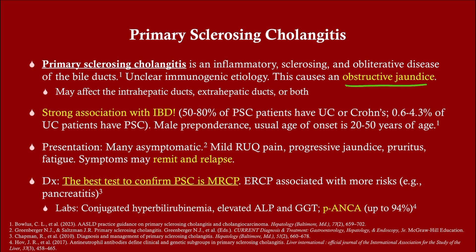Ankylosing spondylitis is another autoimmune disorder with male preponderance, but big autoimmune disorders like lupus, RA, and autoimmune hepatitis have a much bigger female preponderance. The presentation: most of these patients are asymptomatic, but if they do develop symptoms it's going to be those associated with obstructive jaundice — such as jaundice and acholic stools. The symptoms can remit and relapse.